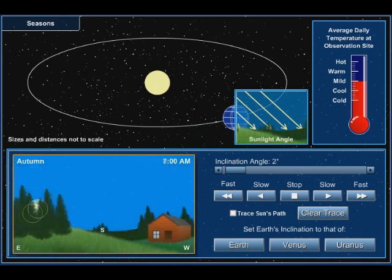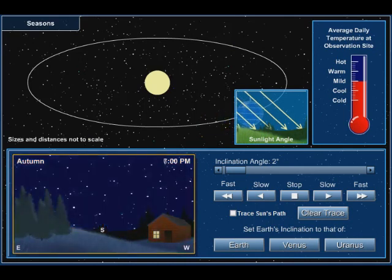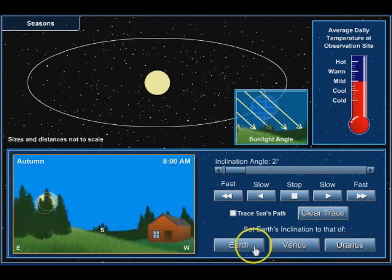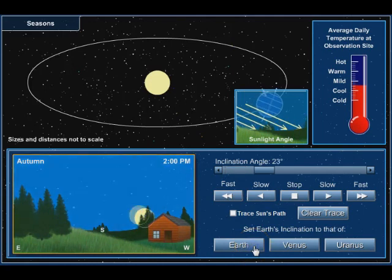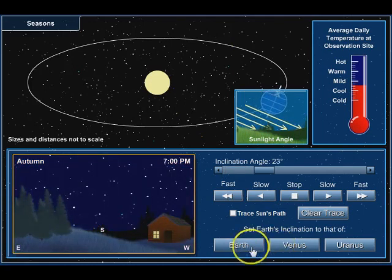you'll notice that it changes how the Sun appears in the sky. You'll notice that it's a little bit higher than it would have been. Now we're back on the Earth.